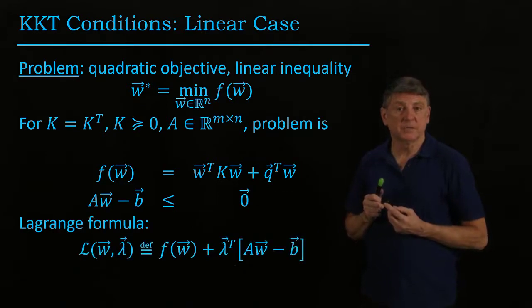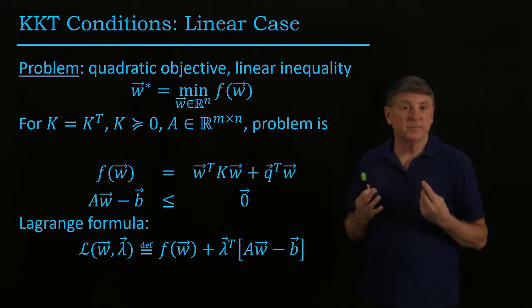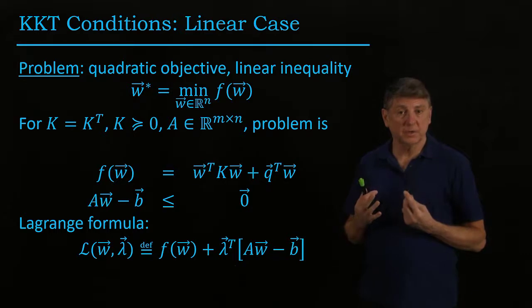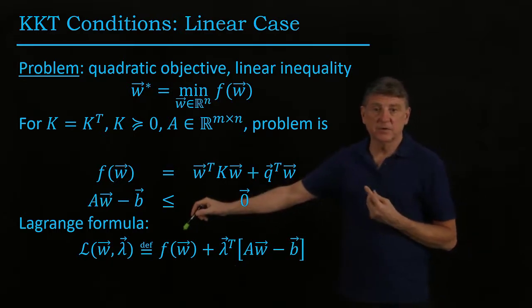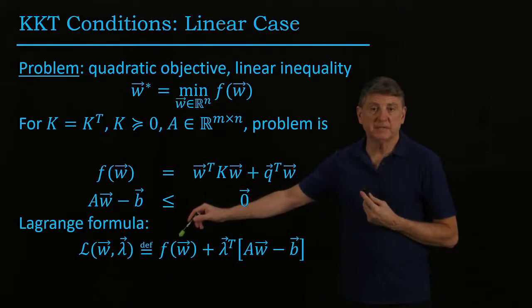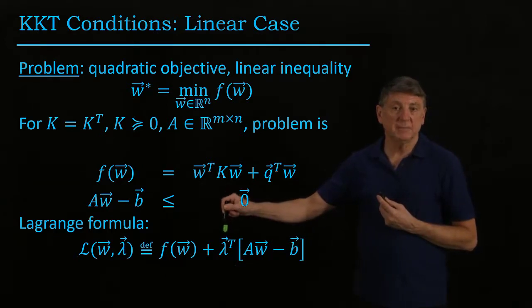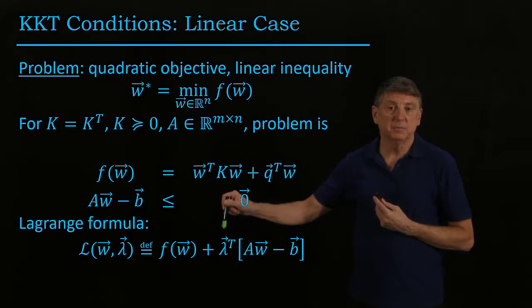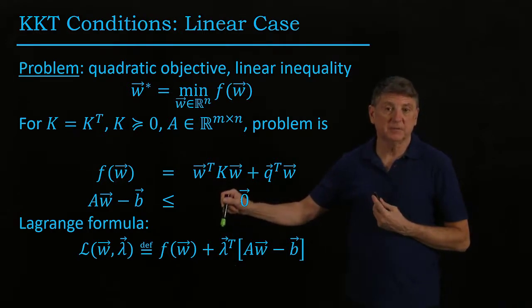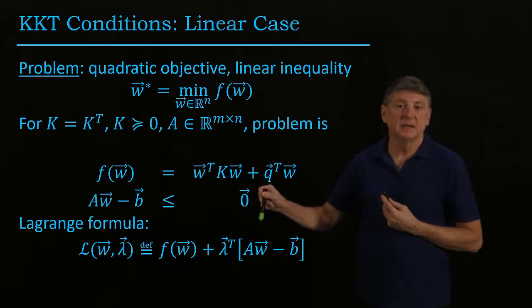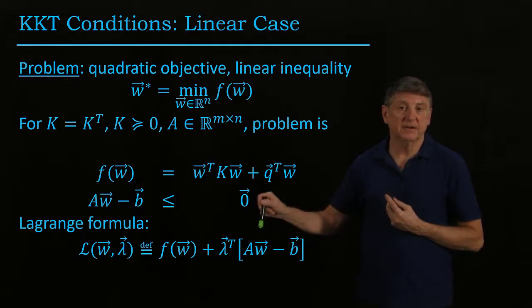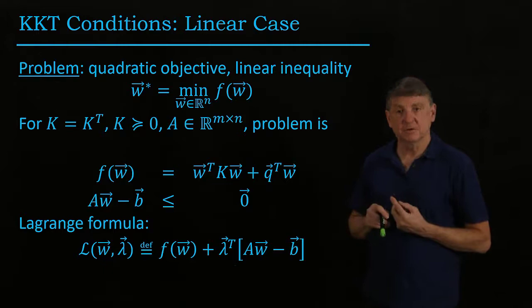So the Lagrange formula for this is quite familiar. It's an extension of what we had for equality constraints. Now the Lagrange function is the objective function. And we'll use the term lambda for Lagrange as our multipliers. And we take the dot product of this Lagrange vector and the constraint vector. And that forms our Lagrange function.